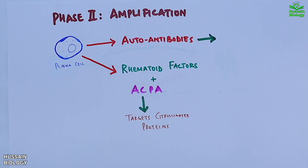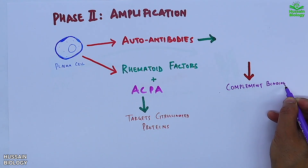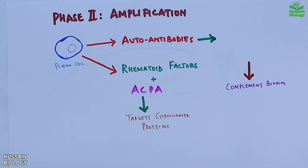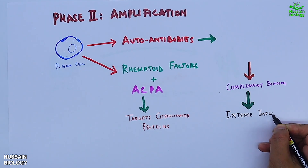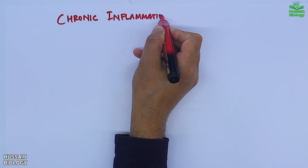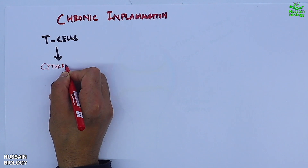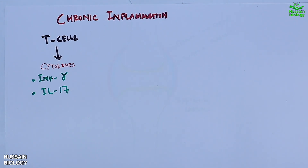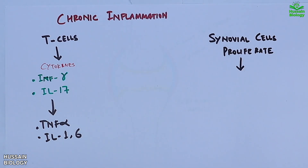The chronic phase begins with T cells secreting cytokines like IFN-gamma and IL-17, which further stimulate secretion of TNF-alpha, IL-1, and IL-6. Under these conditions, synovial cells proliferate, pannus formation — abnormal tissue growth — occurs, and angiogenesis develops. The RANKL signaling pathway is also abnormally activated, producing osteoclasts in the synovium that drive bone breakdown, leading to cartilage breakdown and tissue erosion.